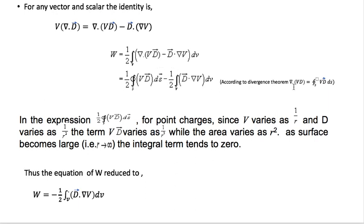By the divergence theorem, the volume integral of del dot (v·D-bar) equals the closed surface integration of v·D-bar ds. For a point charge, v varies as 1/r and D varies as 1/r², so the term v·D-bar varies as 1/r³ while the area varies as r². As the surface becomes large (r approaches infinity), the integral term tends to zero.